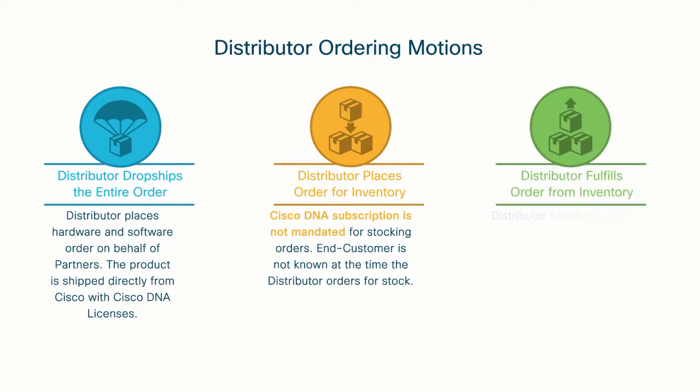Finally, when a partner submits an order to you, you fulfill the hardware from your inventory and place the mandatory Cisco DNA software subscription order with Cisco separately. You will now have the option to provide hardware information at the time the Cisco DNA software subscription order is placed, which allows Cisco to tie the hardware to software licenses systematically. In this video, we will discuss this scenario in detail.